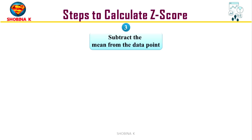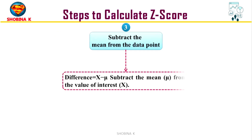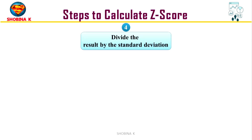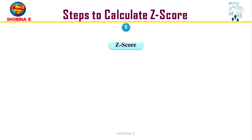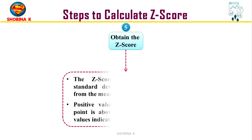Next, subtract the mean from the data point — obtain the difference by subtracting the mean mu from the data point x. Then divide the difference by the standard deviation. And finally, we obtain the z-score.